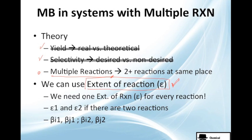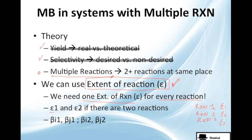We need one extent of reaction for every reaction. What does that mean? If we have reaction 1, reaction 2, and reaction 3, you will see that we will have ε1, ε2, and ε3 — one extent of reaction each. So in case we have two reactions, we have ε1 and ε2. And not only that — because they are different reactions, we will have different coefficients of β.